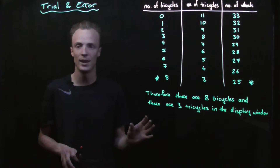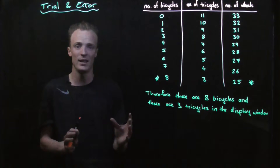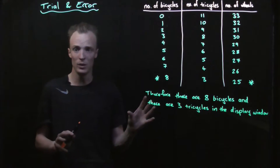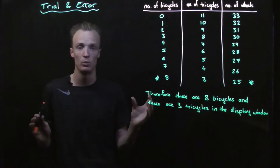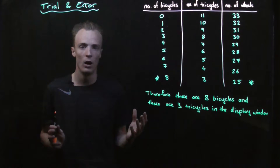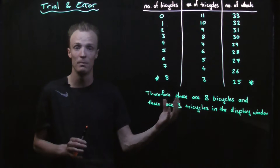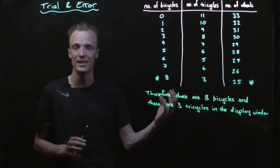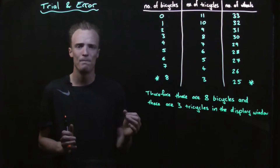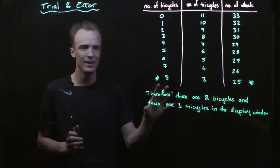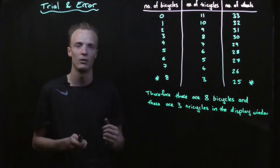We've found the correct solution using trial and error, but there are some limitations to this. Could you imagine doing this with a problem that had thousands upon thousands of possible combinations? Or imagine trying to do it with a problem that didn't have whole numbers — not nice easy integers — something much more complex. This method would be fairly limited in finding accurate solutions for those cases.